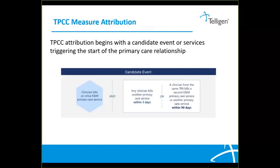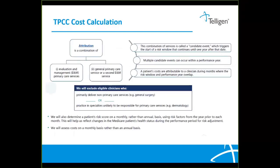Attribution for the total per capita cost measure begins when a clinician bills an E&M primary service. The patient will be attributed to the clinician if any clinician bills another primary care service within three days, or a clinician from the same TIN bills a second primary care service within 90 days. Clinicians who deliver non-primary care or are specialists will most likely be excluded from this measure. Patient risk scores will be updated monthly and the cost assessed on a monthly basis.